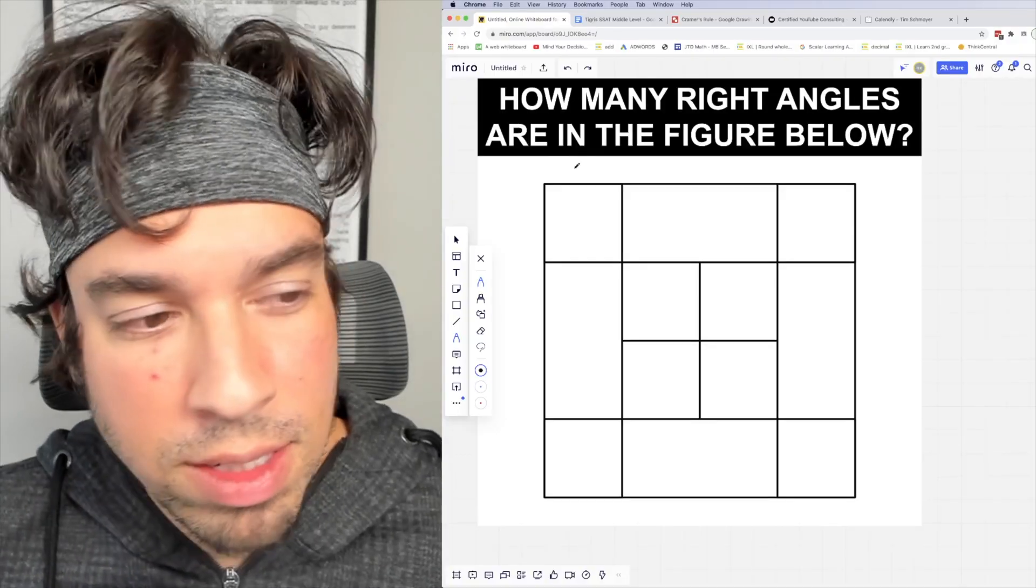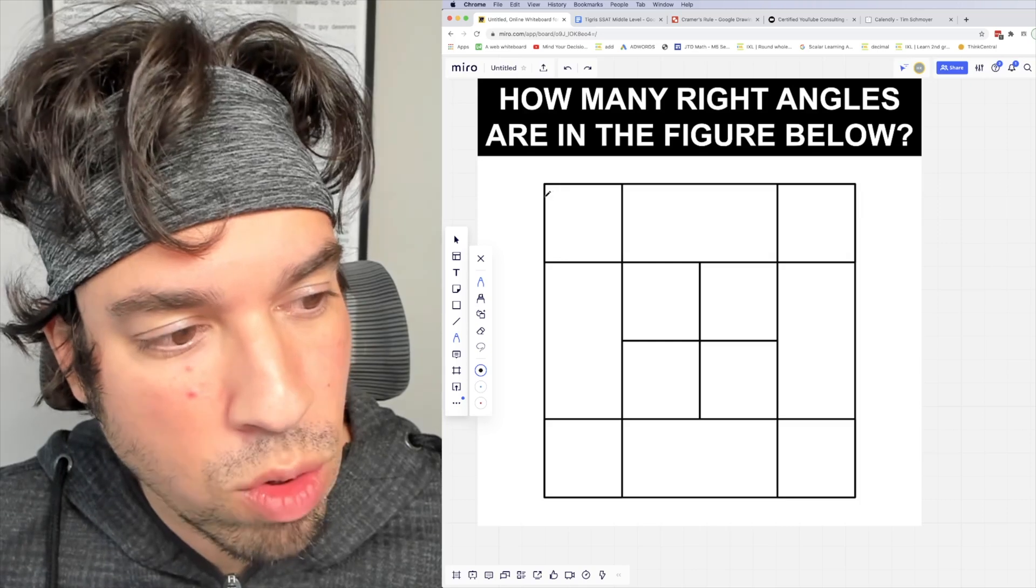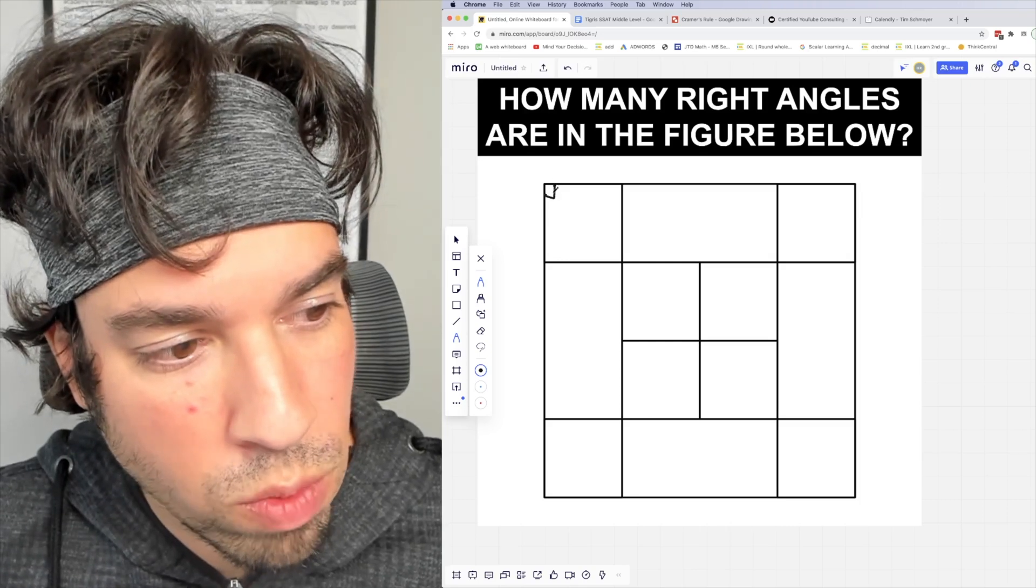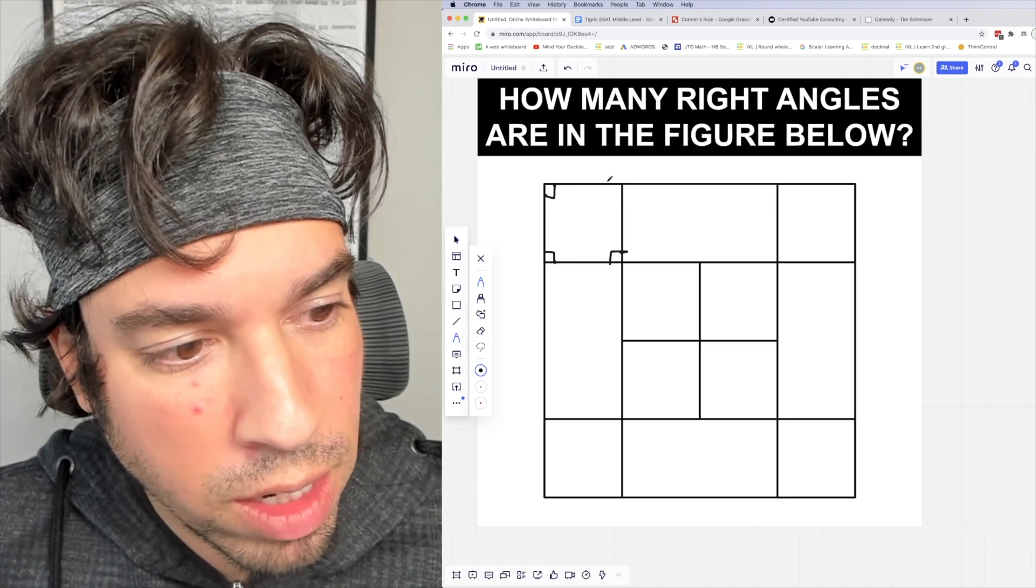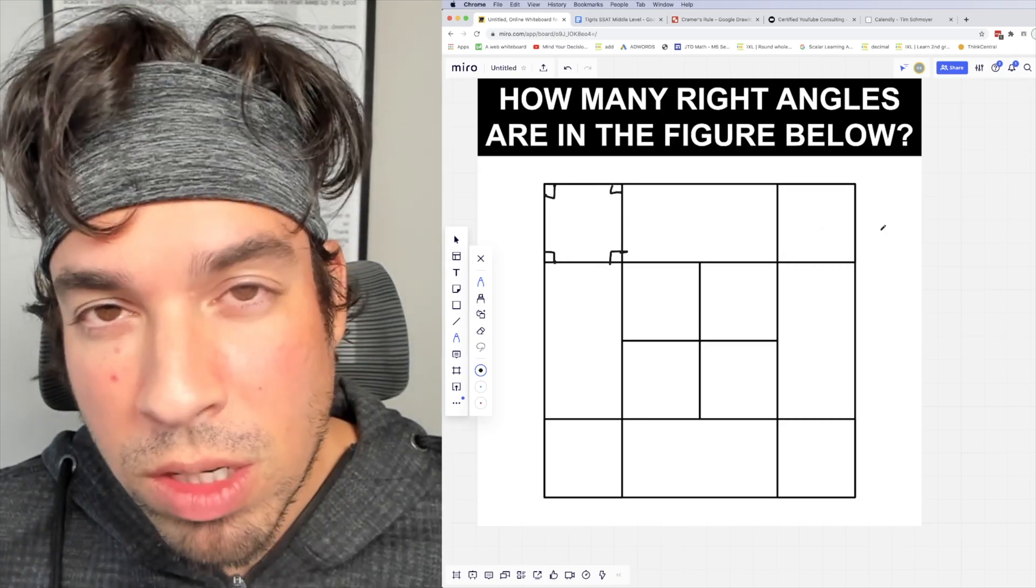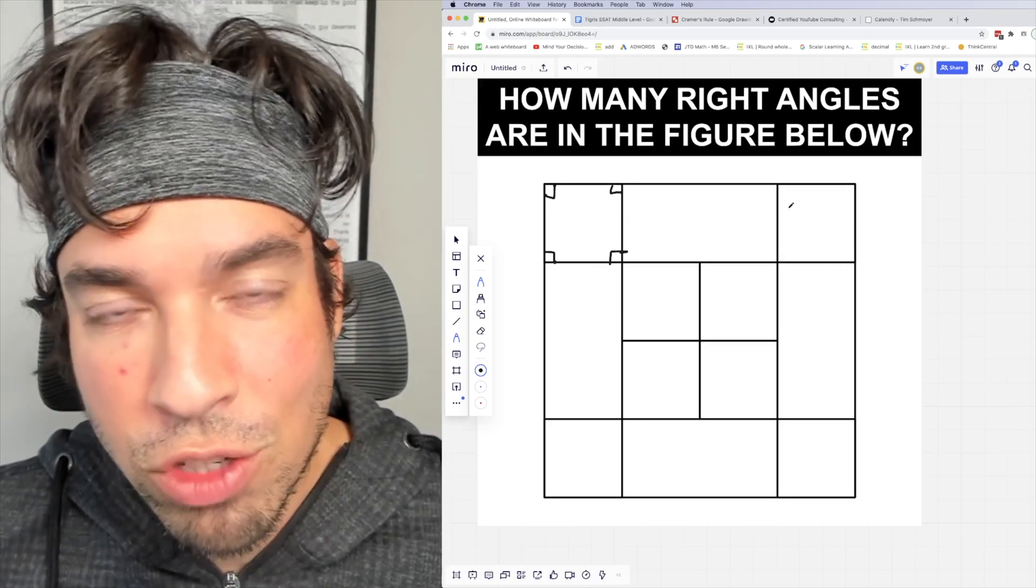So when you look at a puzzle like this, you can start first in the upper left-hand corner and say this square has one right angle, two right angles, three right angles, and four right angles. And you could probably go through and then mark all the right angles in each figure.